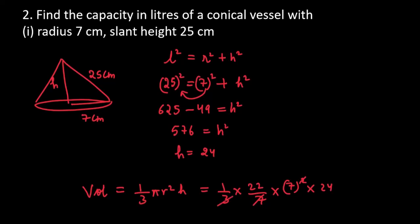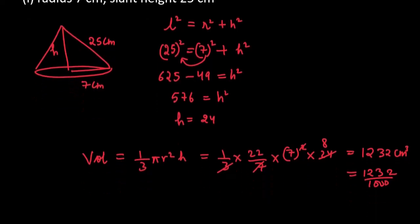7 se 1, 7 cancel ho jayega. 3 se 24 cancel ho jayega. To, aap ke paas bacha kya 22 into 7 into 8. So, the final answer will be 1,232 cm³. Lekin, hamein unhone bola hai ki, liters mein find karna hai. To, liters mein karna hai na, aap ko to divide kar do 1000 se. So, dividing it with 1000,